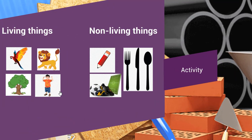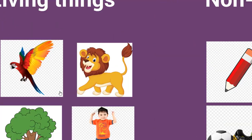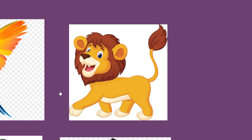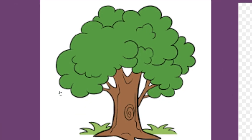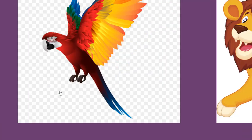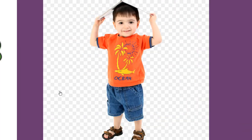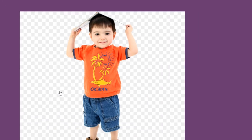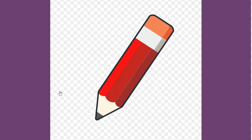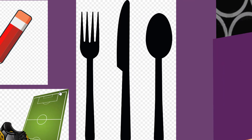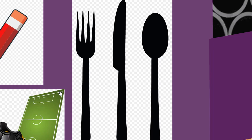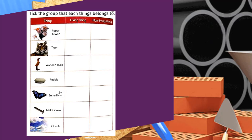Here are a few examples of living and non-living things. Animals, plants, birds and human beings are all examples of living things. Pencil, ball, shoe and fork are all examples of non-living things.